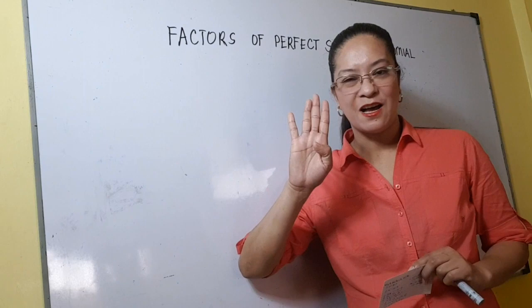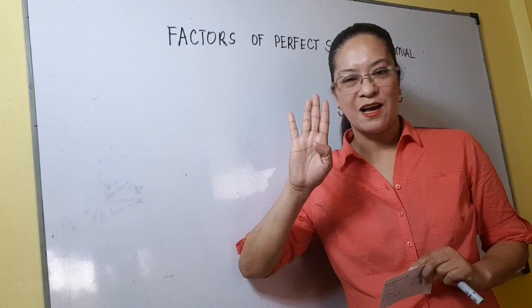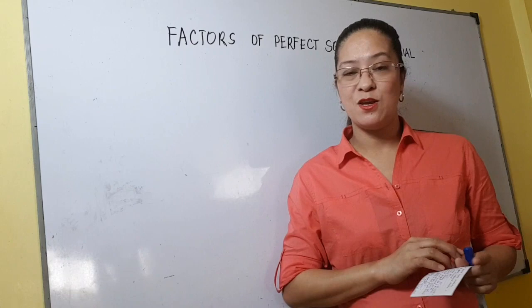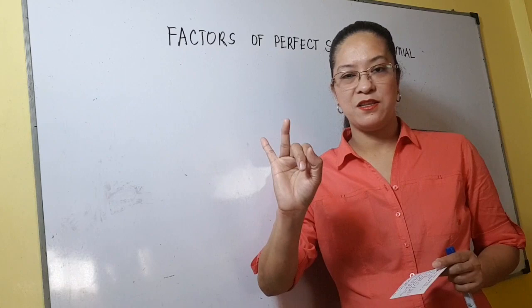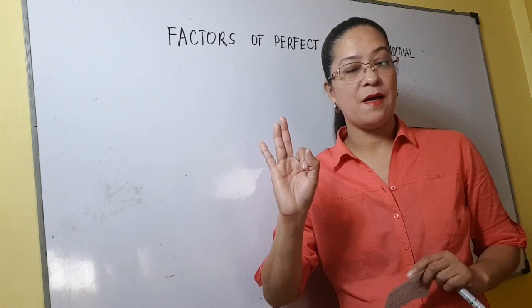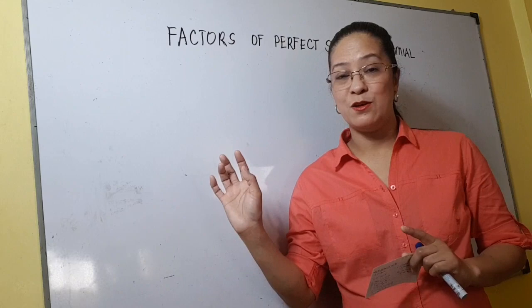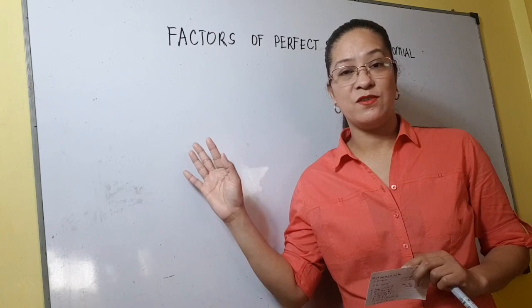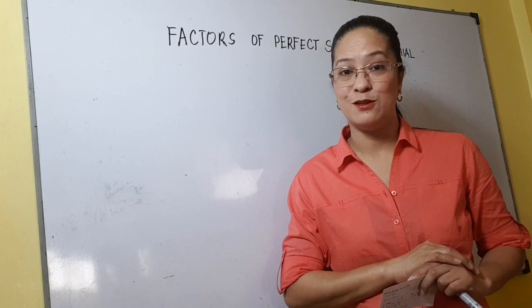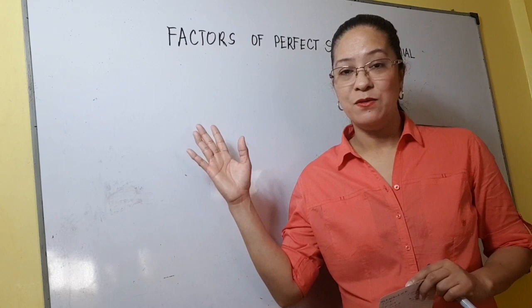So guys, this is our fourth lesson video in factoring. Yung una po nating lesson video ay common monomial factoring. The next is factoring the difference of two squares. And the third video was about factoring the sum and difference of two cubes. Sana po yung mga nanunod na estudyante ay sinusundan natin mula umpisa hanggang sa video na ito at hanggang sa mga susunod pa. Kasi you will never learn the topic in this video kung hindi mo nasundan yung mga nakaraang lesson. So what do we have now? For our fourth video,